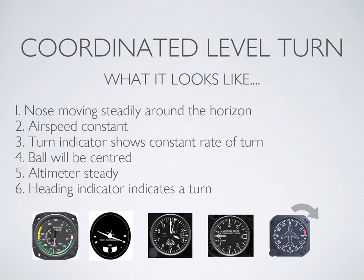Let's talk about a coordinated level turn. Looking outside, you would see the nose moving steadily around the horizon, not moving up or down. From an instrument perspective, we would see airspeed constant, the turn indicator shows a constant rate of turn, the ball is in the center, the altimeter is steady, zero on the VSI, and your heading indicator is indicating a turn.